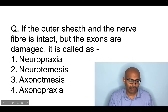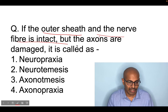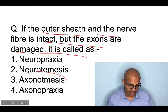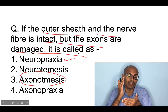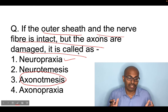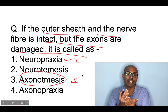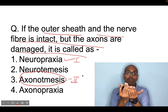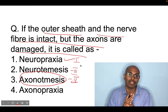The next question was a straightforward peripheral nerve question asking about the Seddon classification. If the outer sheath and nerve fiber are intact but the axons are damaged, what is it called? The answer is axonotmesis. In the Seddon classification: neuropraxia is a compression block — no pathological damage to axon or sheaths, grade one. Axonotmesis is grade two — the inner axons are damaged (endoneurium damaged) whereas the epineurium and perineurium are intact. Neurotmesis is grade three — complete transection of the nerve.